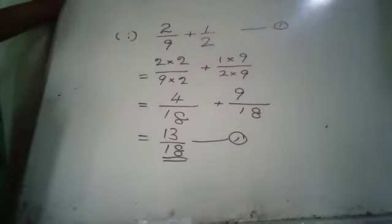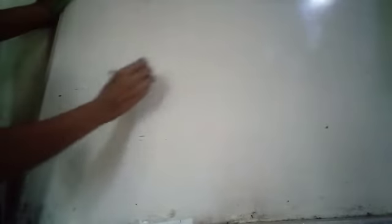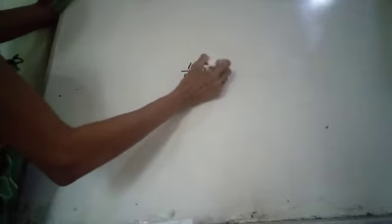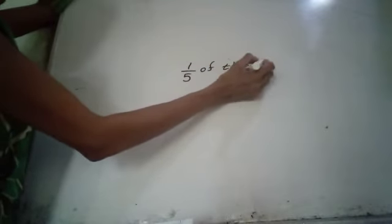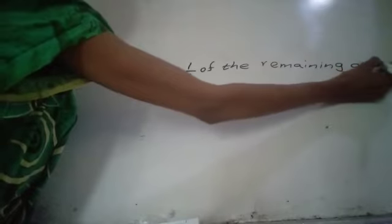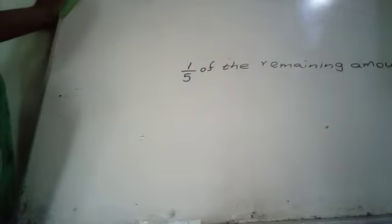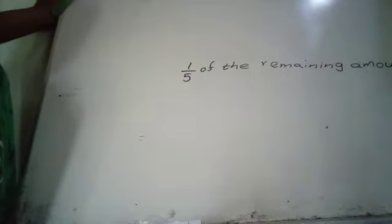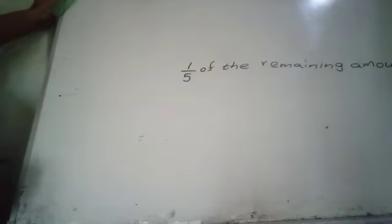That is one mark. Then you have two marks for the next part. One-fifth of the remaining amount was used to buy books for the library. Find the fraction of the total amount used to buy books. First, we find the fraction of the total amount already used.